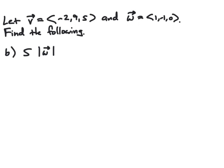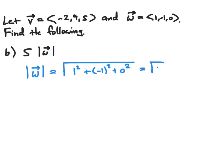Next, we want to find the value of 5 times the magnitude of W. To do this, we first find the magnitude of vector W and then multiply it by 5. The magnitude is the square root of the sum of the squares of the components: 1 squared plus negative 1 squared plus 0 squared, which is the square root of 2. So 5 times the magnitude of W equals 5 times the square root of 2.